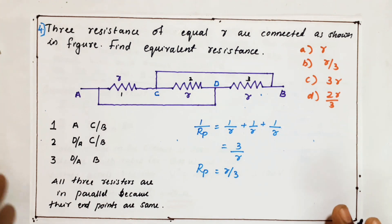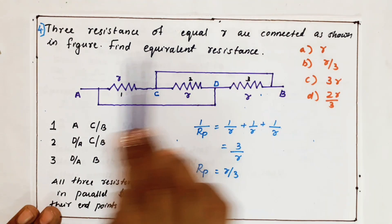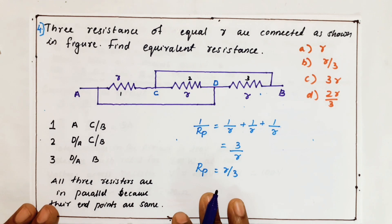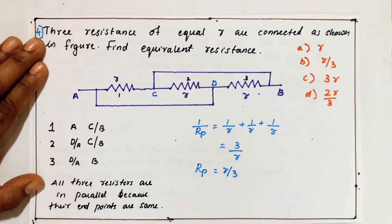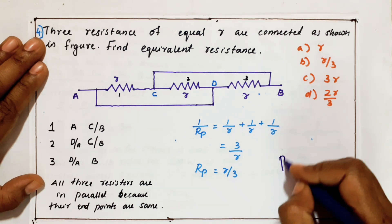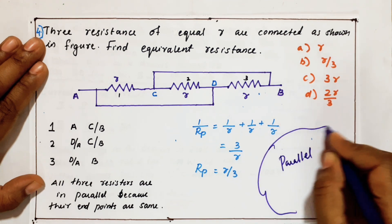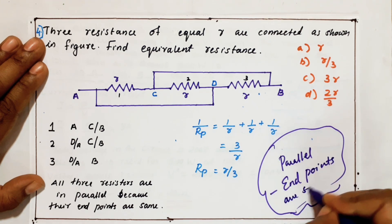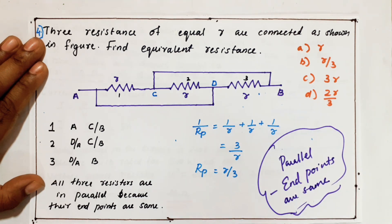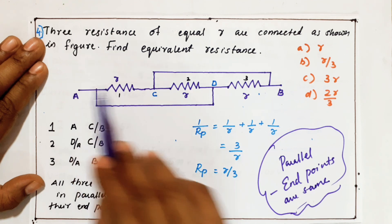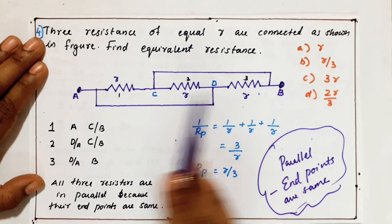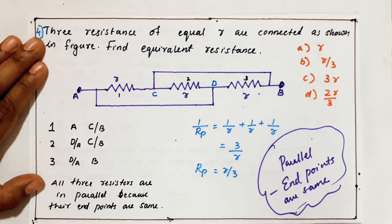It is a very important question. Three resistances of equal resistance are connected as shown in the figure — R, R, R. Find the equivalent resistance. It looks like a series connection, but it is not — it is a parallel combination. Parallel means endpoints should be same. Here the points are marked A and B. For all three resistors, one endpoint is at A and the other endpoint is at B, so we call it a parallel connection.